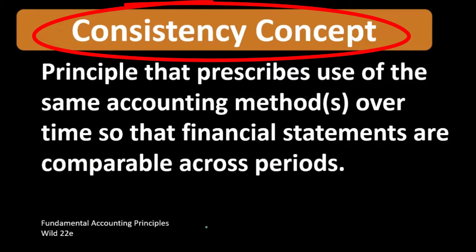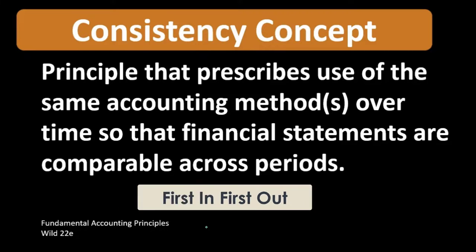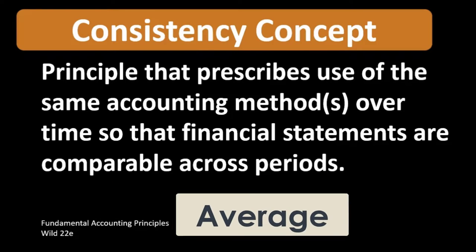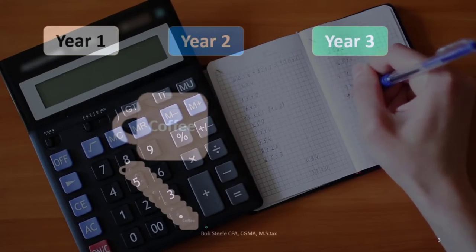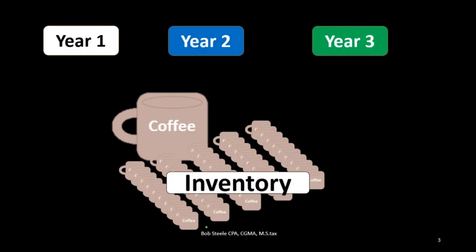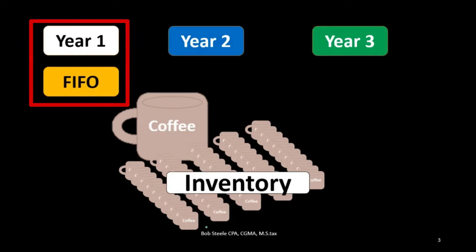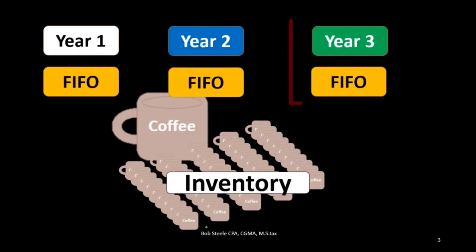Here we're considering the assumptions we make with the flow of inventory — those being either first in first out, last in first out, or the average method for cost flow assumptions. Because these are assumptions, they do have an effect on the financial statements. Therefore, we want to make sure we are consistent, meaning that if we used first in first out in year one, ideally we would want the same assumption in year two, year three, and so forth.